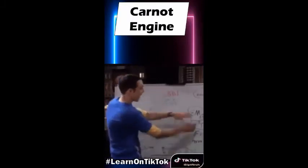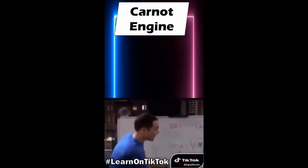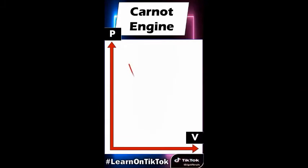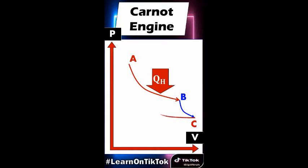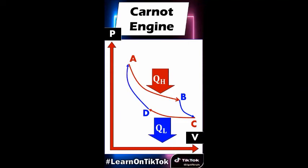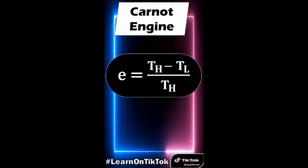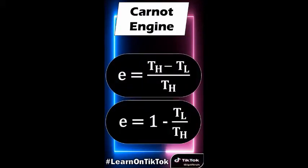To illustrate the Carnot cycle: first, the gas is expanded isothermally with addition of heat. Next, the gas expands adiabatically where no heat is exchanged but the temperature drops. At lower temperature, the gas is then compressed at constant temperature, and there is heat exhausted in this process. Finally, the gas is compressed adiabatically back to its original state. The ideal concept states that the heats are proportional to operating temperatures, represented by an equation used to calculate engine efficiency.